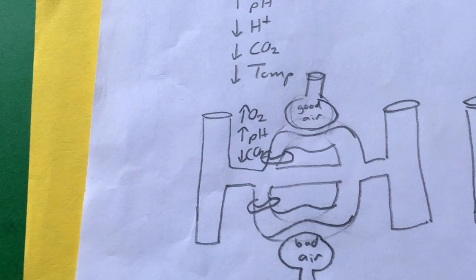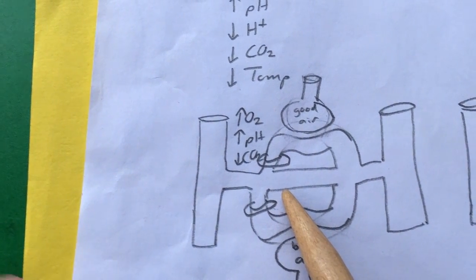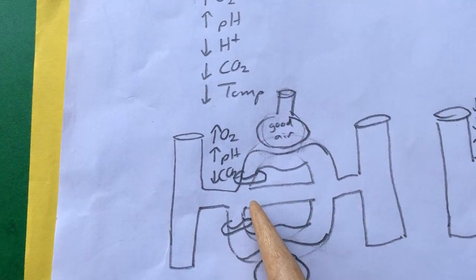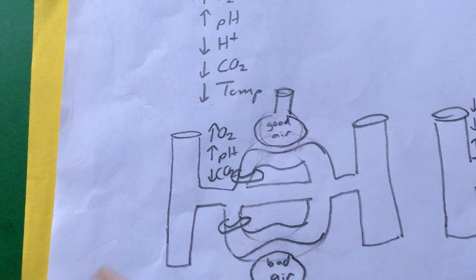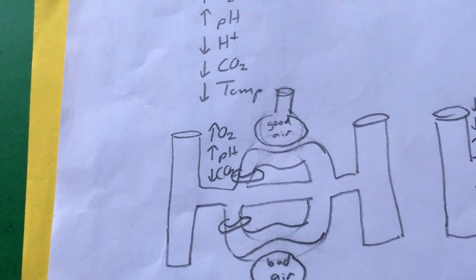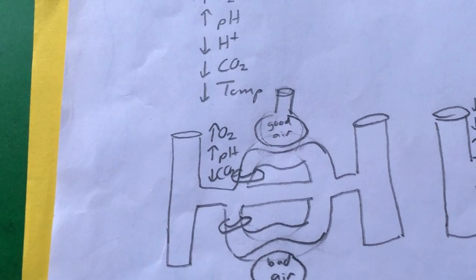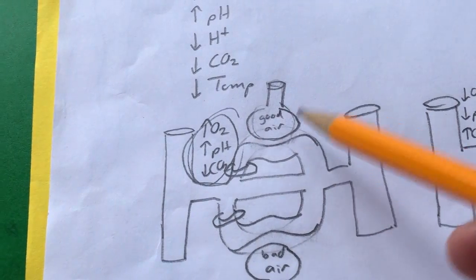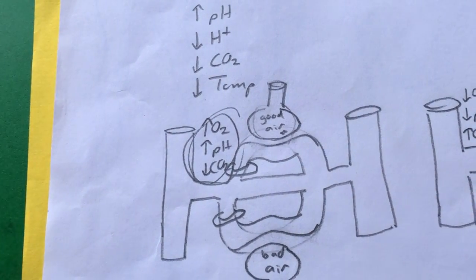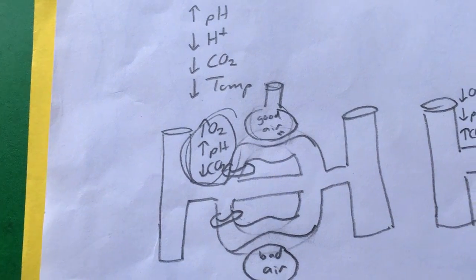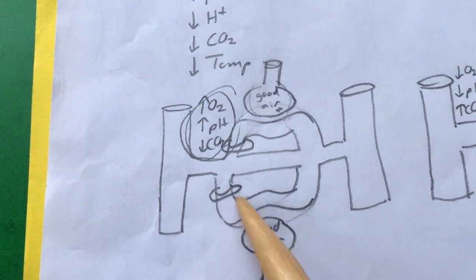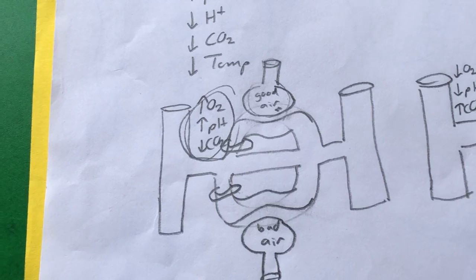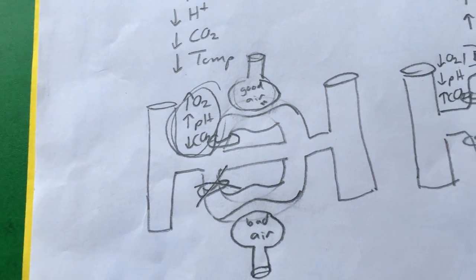Pulmonary precapillary sphincters respond to oxygen level, pH, and carbon dioxide. The conditions that cause pulmonary precapillary sphincters to open are high oxygen, high pH, and low carbon dioxide — meaning blood flows toward where there's good air. They shut down and blood doesn't flow toward where there's bad air.